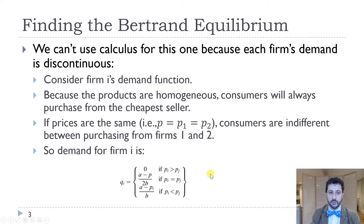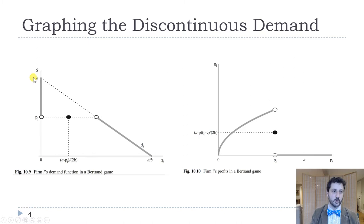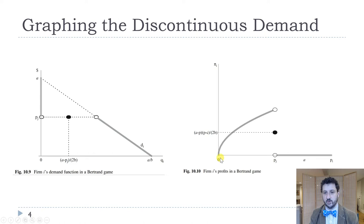This key assumption drives our results and also means we have a discontinuous demand curve — zero until we reach our competitor's price, then half the market demand when prices are equal, and the full market demand when our price is below the competitor's. Because our demand curve is discontinuous, our profit function is also discontinuous: regular profit until our price gets too high, then profit drops to zero.